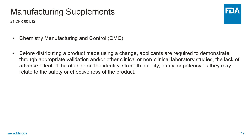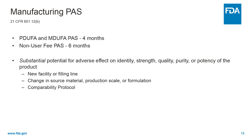Chemistry, manufacturing, and controls, or manufacturing supplements, are required to make changes to a product. The FDA evaluates these changes to determine if a product's identity, strength, quality, purity, or potency is negatively affected. The potential for adverse effects determines the type of manufacturing supplement that should be submitted. A manufacturing PAS contains a proposed change that has substantial potential to adversely affect a product and must be reviewed and approved by the FDA prior to implementation. Such changes could be a new facility, changes to source material, or a new comparability protocol. Manufacturing PASs are typically reviewed on a four-month clock.